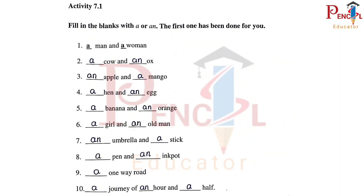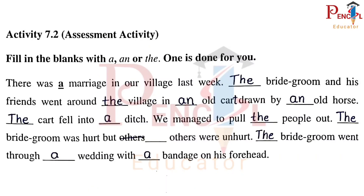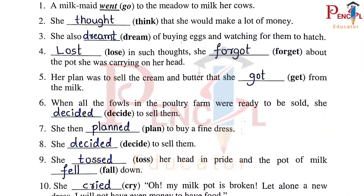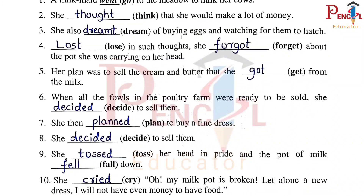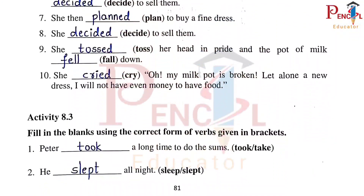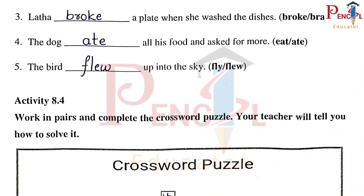Activity 7.1, Activity 7.2. Filled the blanks with articles. Activity 8.2, Activity 8.3. First one: Peter took a long time to do the sums. Second one: He slept all night. Third one: Latha broke a plate when she washed the dishes.